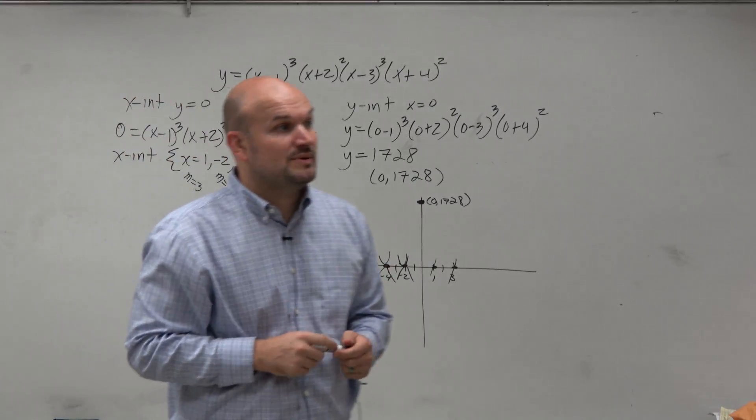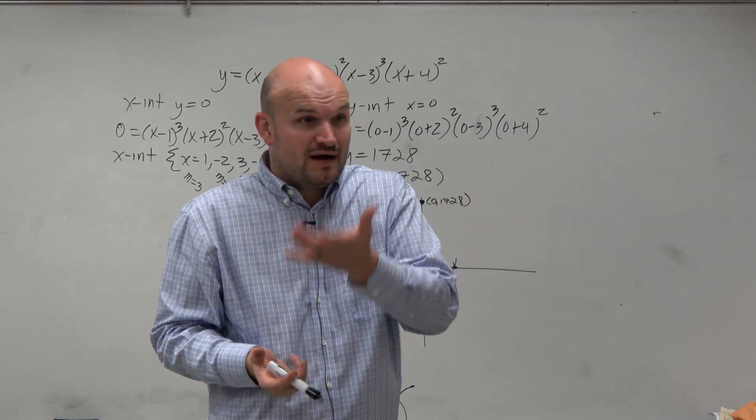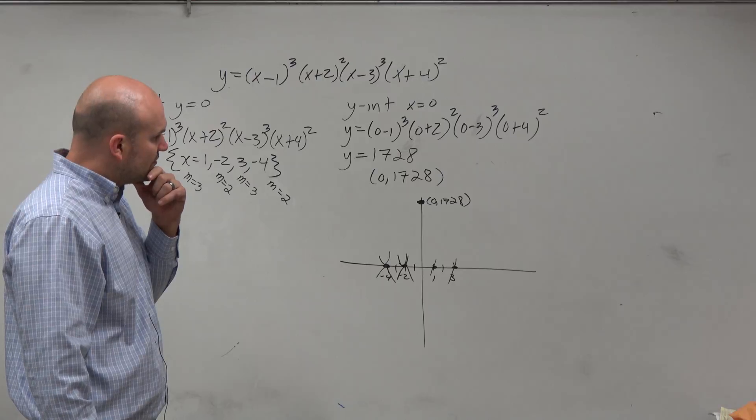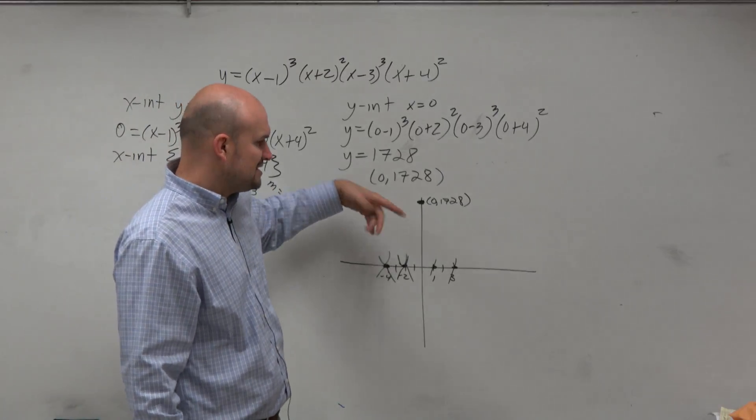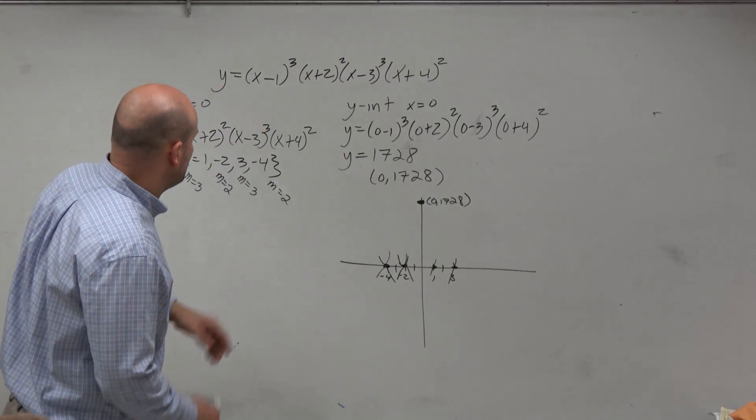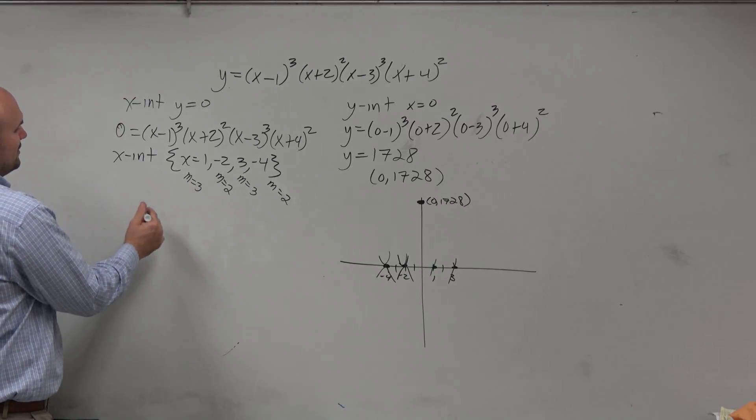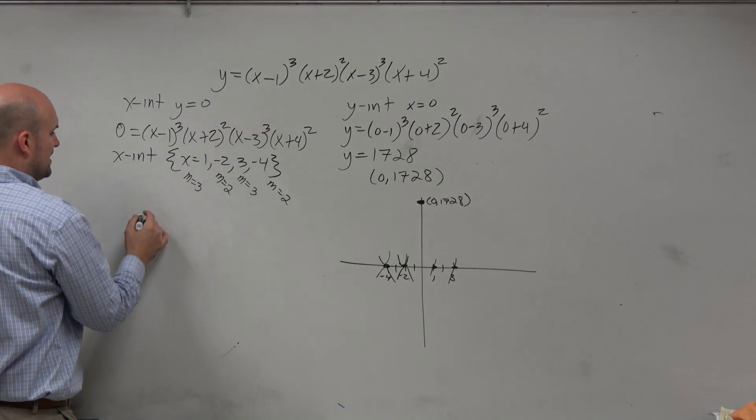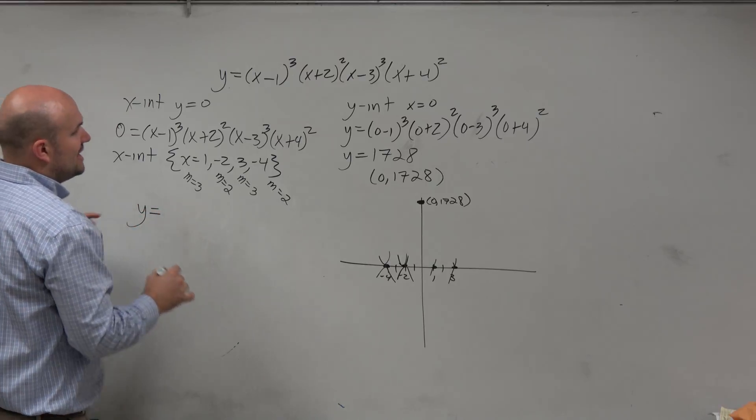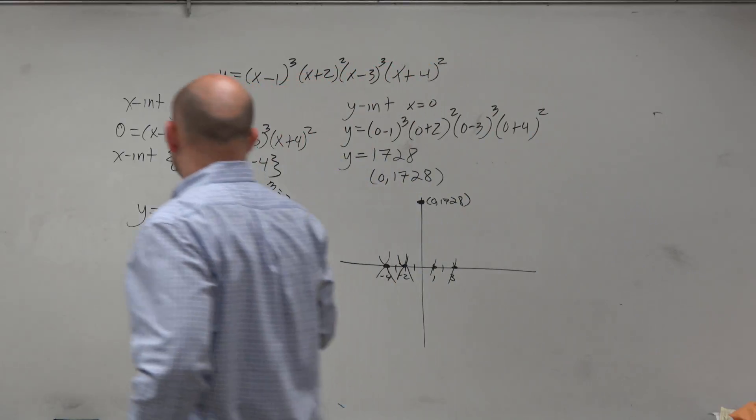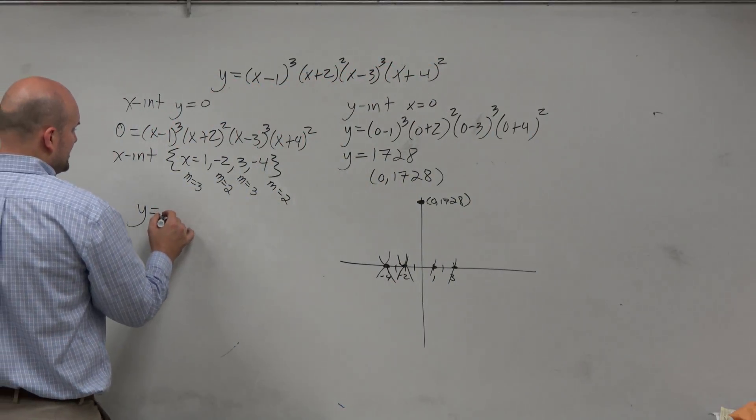So now what we need to do is determine this end behavior. We've got to figure out how does this graph look. Because obviously, having the y-intercept is helpful for us, but if we didn't have the y-intercept or whatever else, knowing this end behavior is going to help us do that. So again, what I showed you guys is if you were to expand these, just look at the highest term. So if I expanded (x - 1) cubed, I would get x cubed.